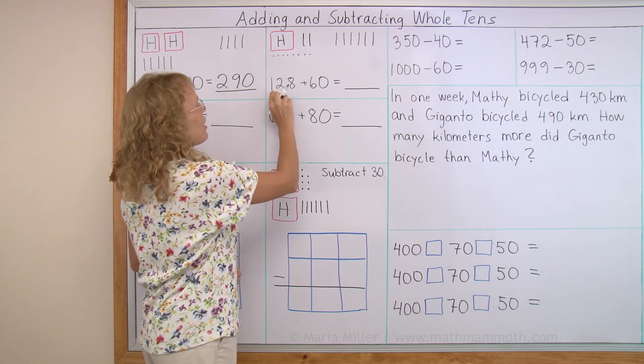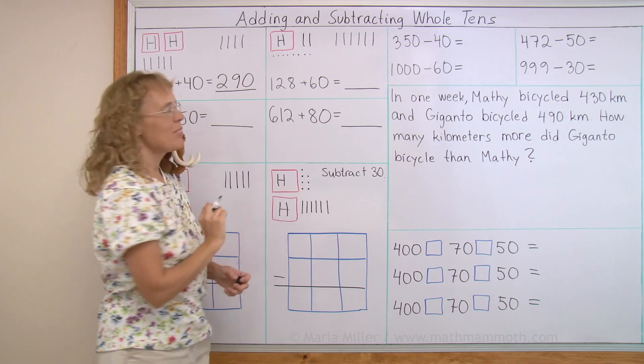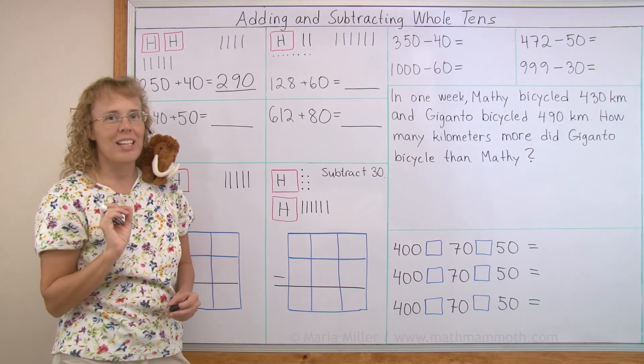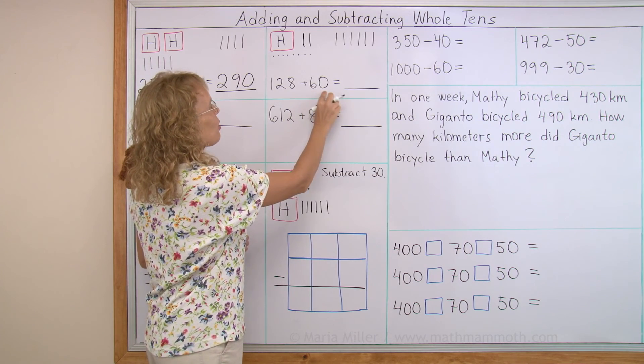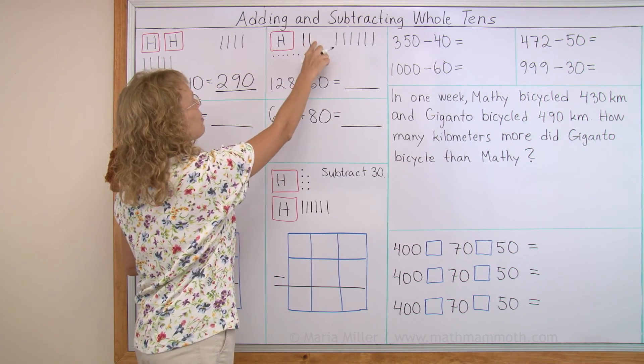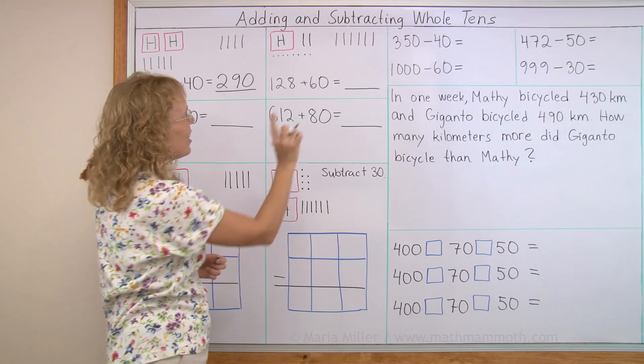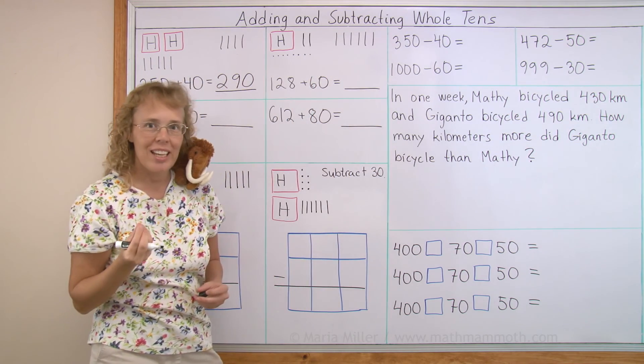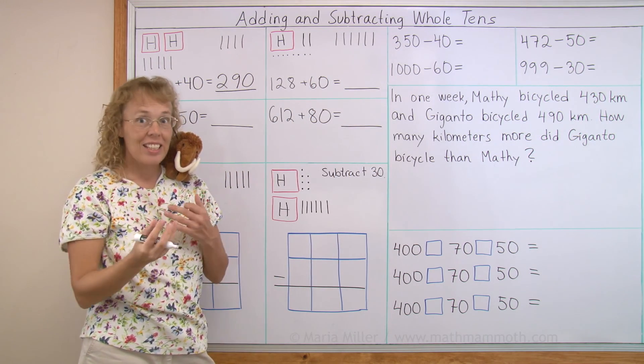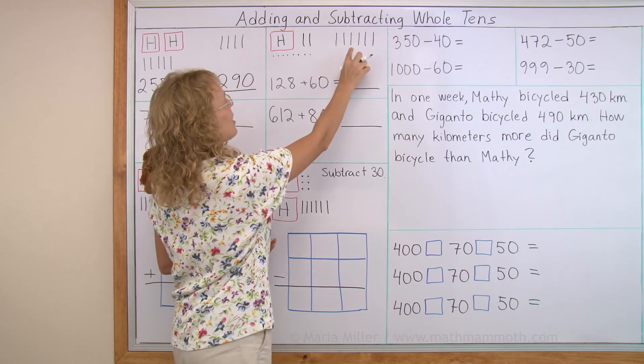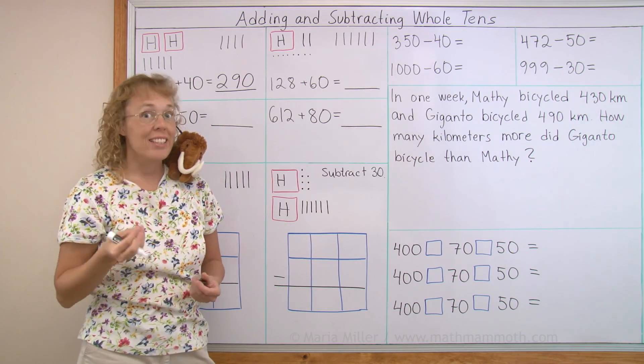Another one, I have 128 plus 60. Now that looks a little bit more complicated, doesn't it? But we're just adding whole tens. We have the 128 over here and then 60 or six more tens. So again, you're just adding the tens together. The two tens and the six tens makes, of course, eight tens.